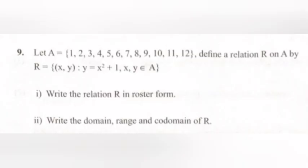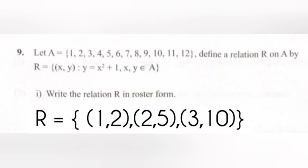Problem 9: Let A = {1, 2, 3, 4, 5, 6, 7, 8, 9, 10, 11, 12}. Define a relation R on A by R = {(x, y) : y = x² + 1, x, y ∈ A}. Part i: Write the relation R in roster form. Part ii: Write the domain, range, and codomain of R.